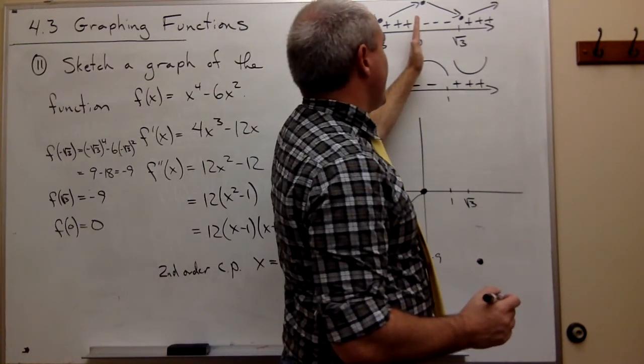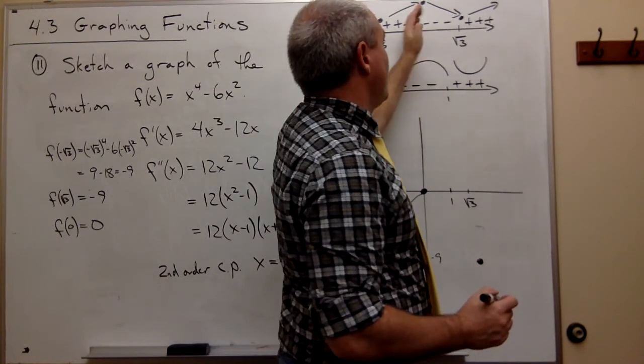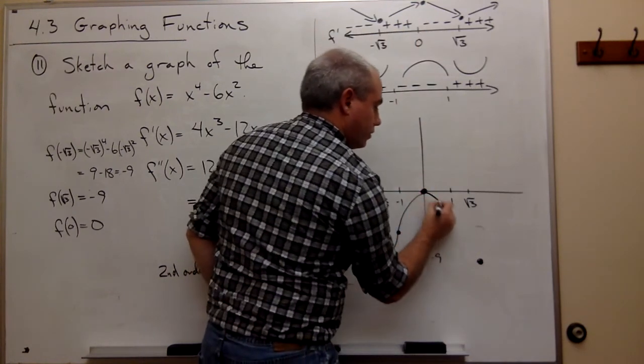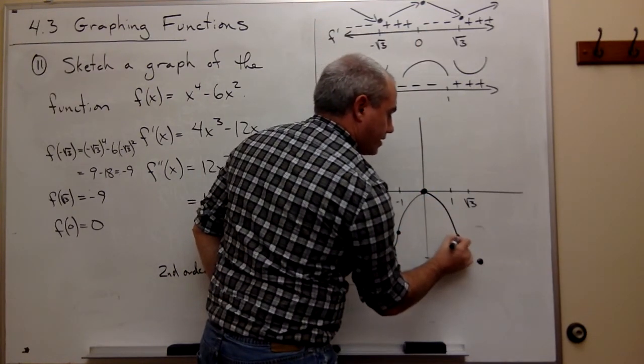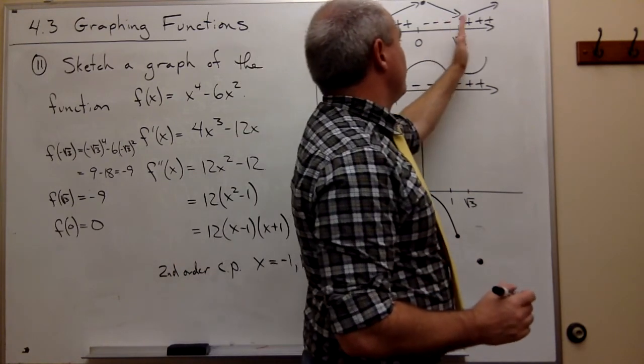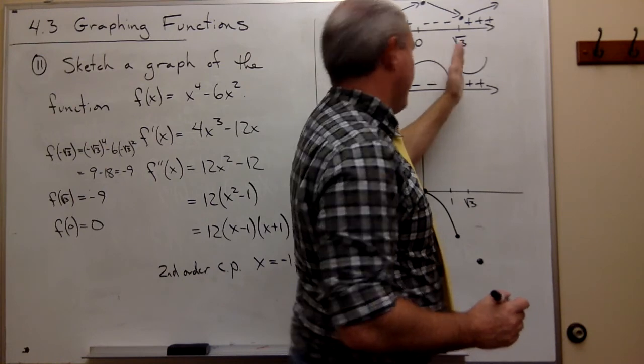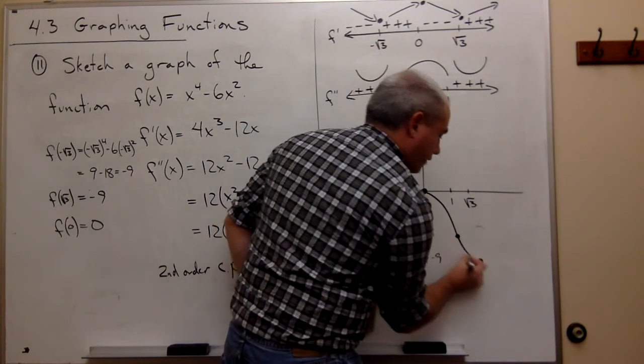And once I get to 0, now between 0 and 1, I'm going down, and I'm concave down, until I get to some point here. From 1 to root 3, I'm still going down, but I'm concave up. So the concavity changes.